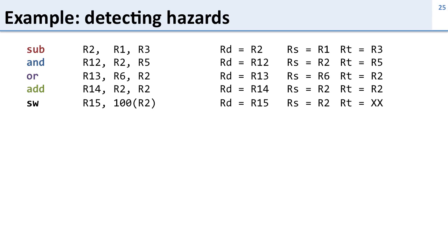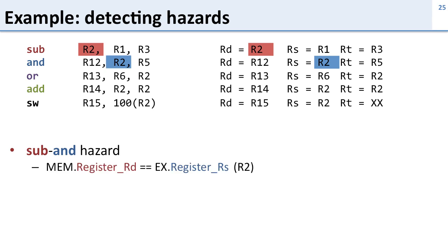Let's look at some examples of how you detect hazards. Here we have a bunch of instructions. The first instruction has its destination of R2 — it's going to write its results into R2. Let's see if there's a hazard between the subtract and the AND. The subtract has its destination of R2 and the AND has a source of R2. The hazard detection logic will detect that, when the subtract instruction is in the MEM stage and the AND instruction is in the execute stage, the destination register is the same as the execution stage's source register — so there is a hazard there.